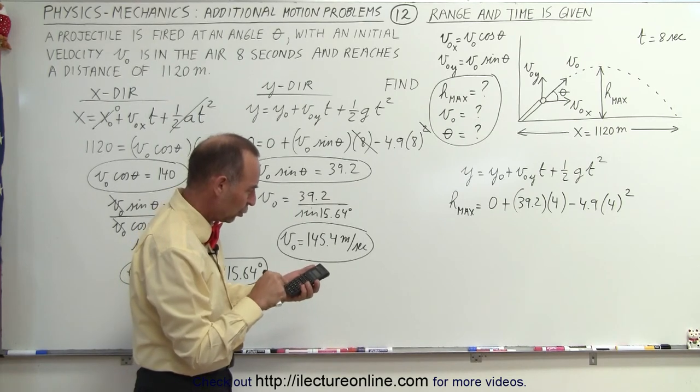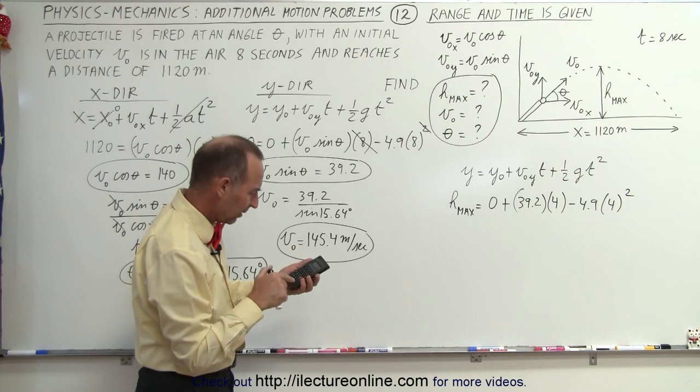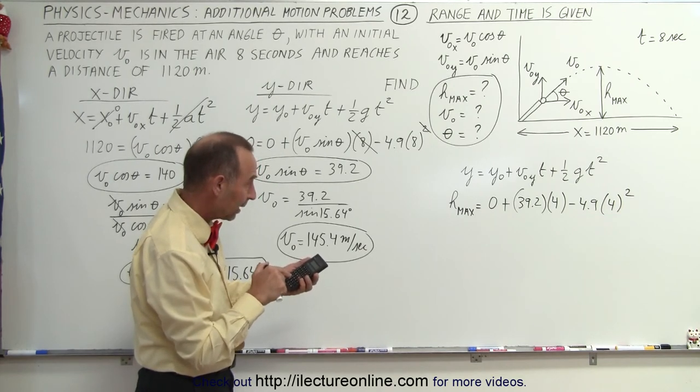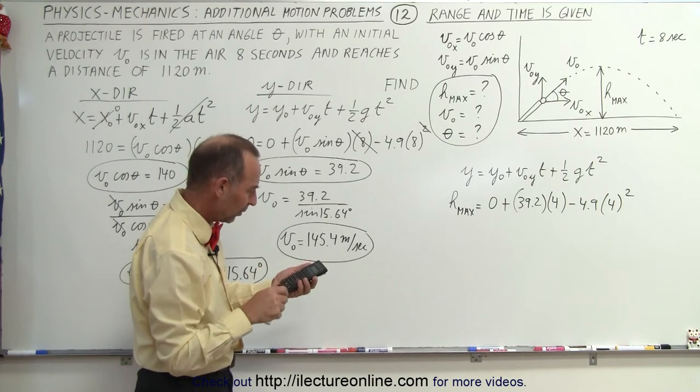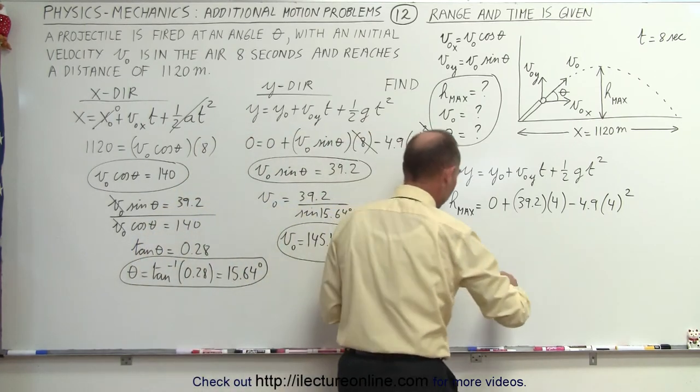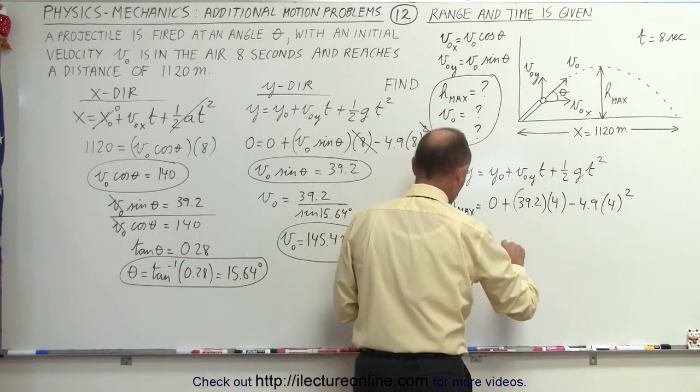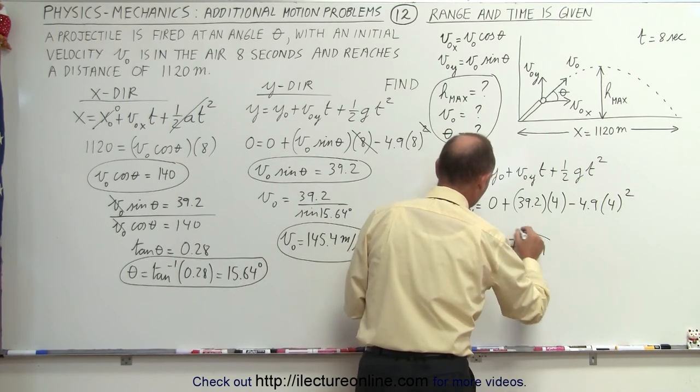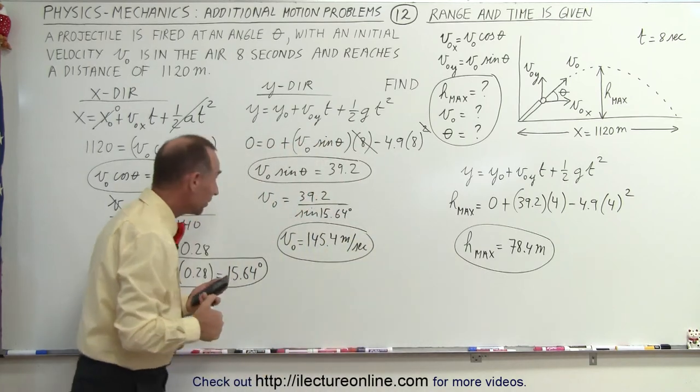So we get 39.2 times 4 and subtract from that minus 4.9 times 16, and h max is equal to 78.4 meters. All right.